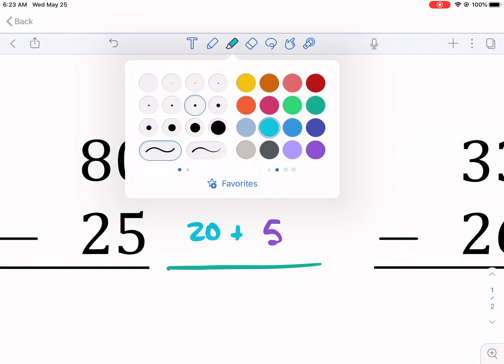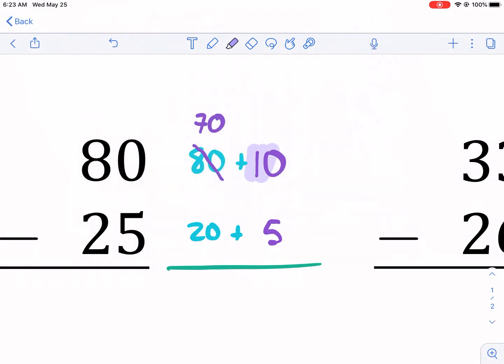The reason why we can do this is now, or the reason why we do this is because now we can do 10 minus 5. So 10 minus 5, we know is 5. And now we have 70 minus 20. And that is 50. What's 50 plus 5 is 55.